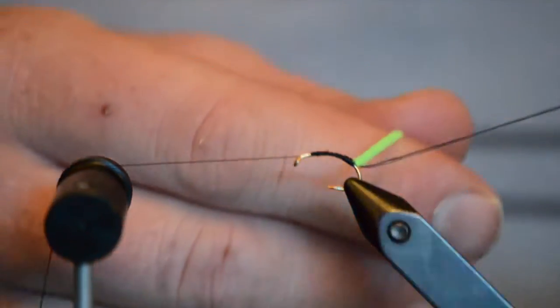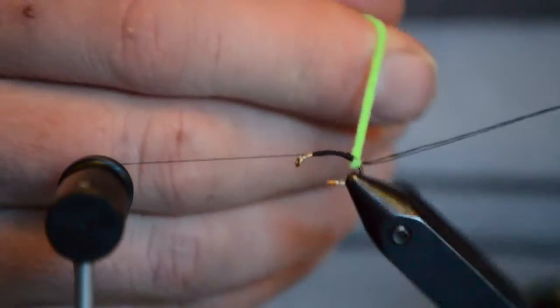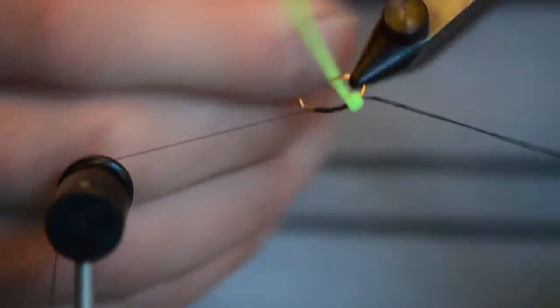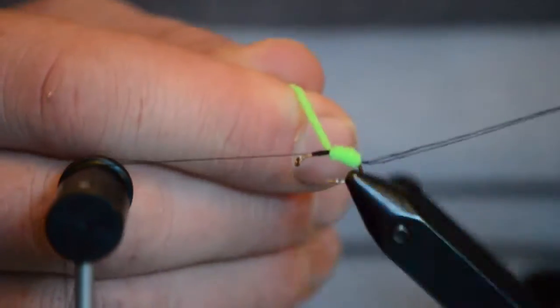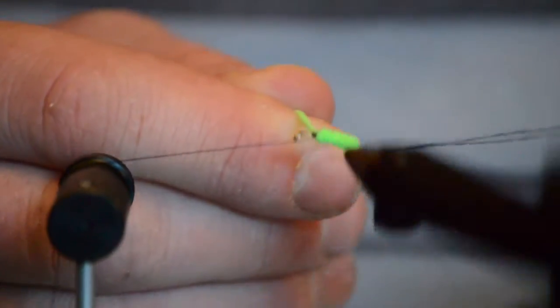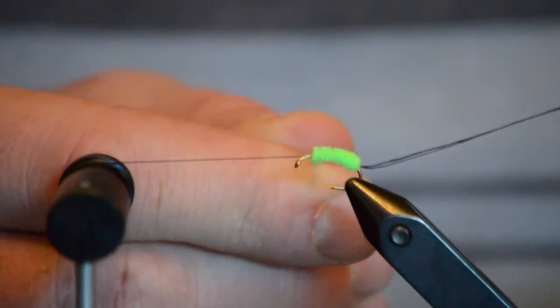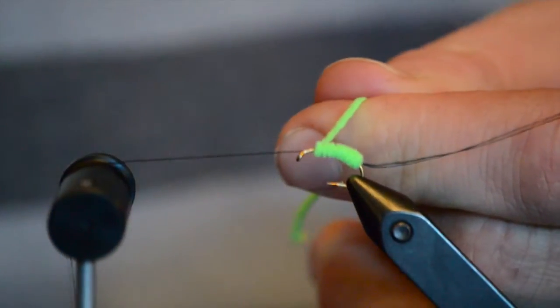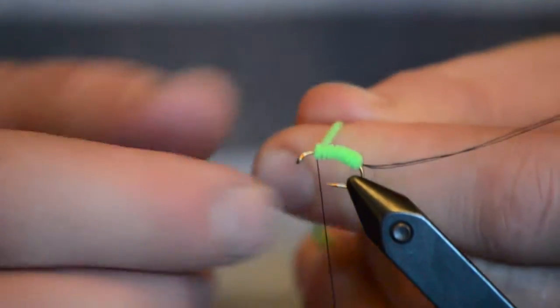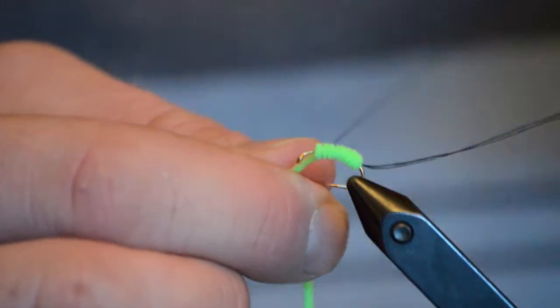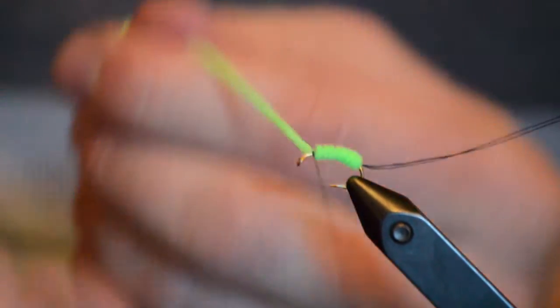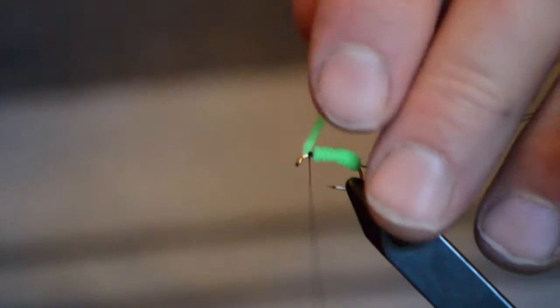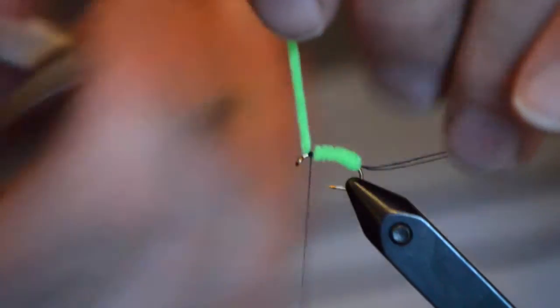We'll start by wrapping the chenille and we'll wrap it the same direction as the thread. We'll wrap that to about two thirds of the length of the hook to form the abdomen of our caddis. We'll capture that and put a few tight wraps on there and clip off the excess chenille.